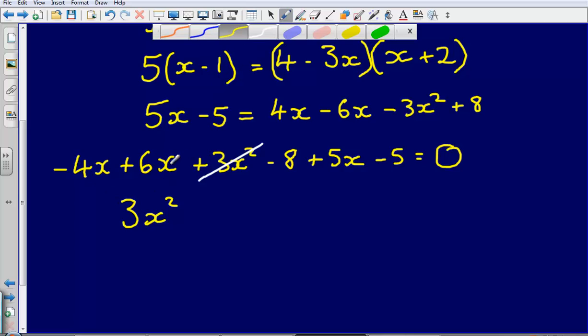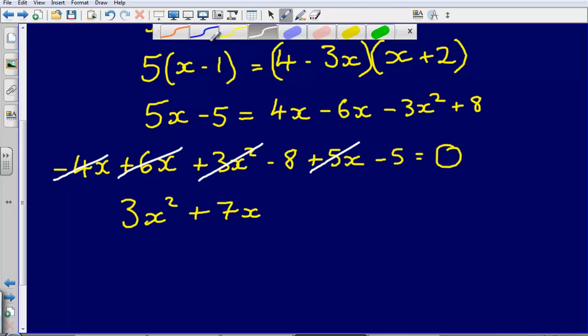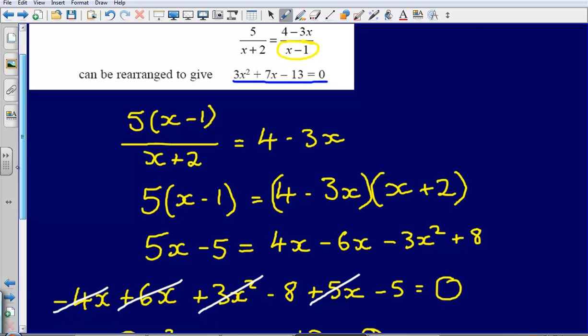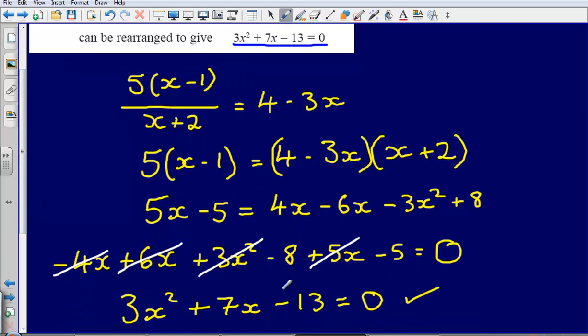Let's collect the x terms together. I've got plus 6x minus 4x, that gives me 2x plus 5x, that gives me plus 7x. So I've dealt with all of the x terms. And then what am I left with? I'm left with negative 8 and negative 5, so that gives me minus 13 equal to 0. Now is that what I started with? 3x squared plus 7x minus 13, yes it is.